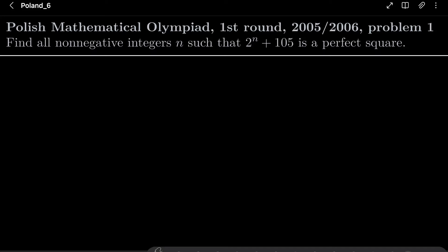Hello friends, in this video I'd like to solve the following problem from the Polish Mathematical Olympiad, first round, 2005, problem number 1. We wish to find all non-negative integers n such that 2 to the power of n plus 105 is a perfect square.